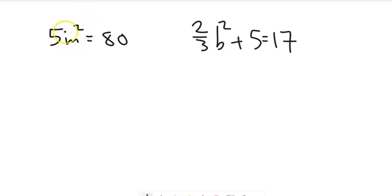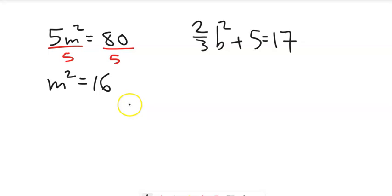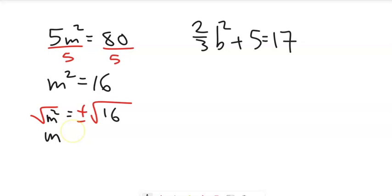Let's do a couple more. I'm not going to square root both sides just yet — I'm going to get the M squared all alone and then square root. So I'll divide both sides by 5, because I've got 5 times something equals 80, so that something must be 80 divided by 5, which is 16. Now I'll square root both sides — plus or minus comes in with it — so M equals plus or minus 4.